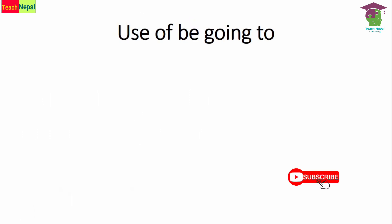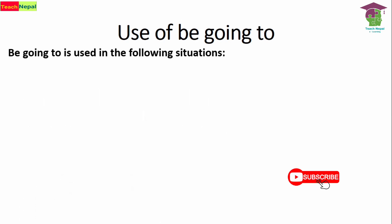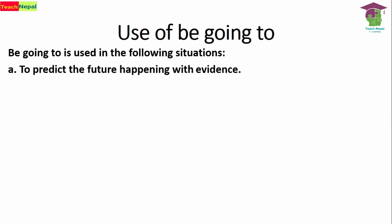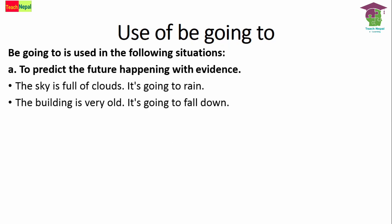Now let's get started with 'be going to.' Although the structure resembles present continuous, it is used to talk about future actions, events, or predictions. 'Be going to' is used in the following situations. First, to predict a future happening with evidence. For example: 'The sky is full of clouds — it's going to rain.' The first sentence is the evidence; the second is the prediction. 'The building is very old — it's going to fall down.'